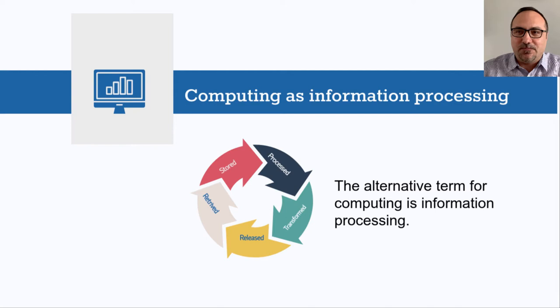Not surprisingly, perhaps, the fundamental stuff of computer science is information. The computer is the means by which information is automatically retrieved from the environment, stored, processed or transformed, and released back to the environment. This is why an alternative term for computing is information processing.